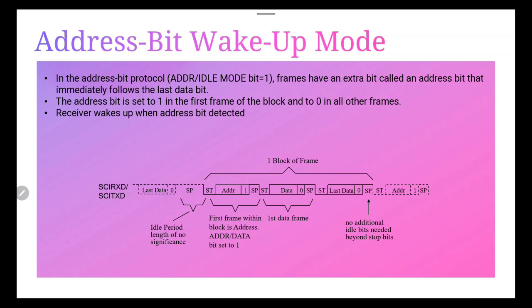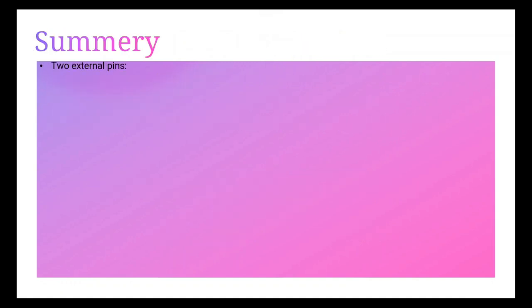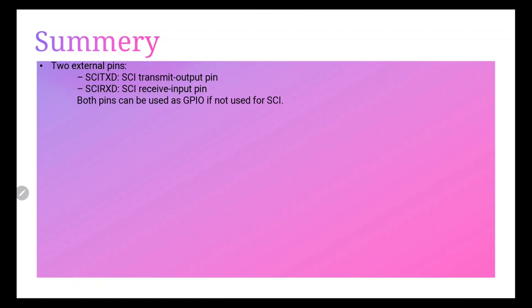The receiver wakes up when an address bit is detected by automatically setting the address/data bit in the frame by setting TX wake equal to 1 prior to writing the address to the SCI buffer. In summary, SCI generally uses two external pins for any microcontroller: one transmit pin (output) and one receive pin (input). For the C2000 microcontroller, all pins can be used as GPIO pins, and SCI pins can also be used as GPIO if not used for serial communication. The baud rate is programmable with up to 64K different rates.